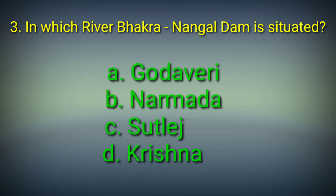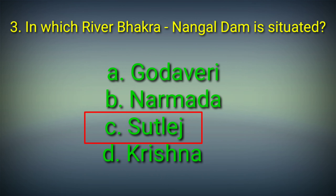Third question: In which river is Bakra Nangal Dam situated? Options: A. Godavari, B. Narmada, C. Sutlej, D. Krishna. Answer: Option C. Sutlej. Bakra Nangal Dam is situated in the Sutlej river.